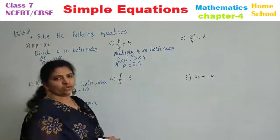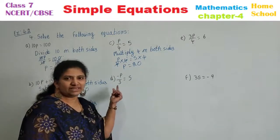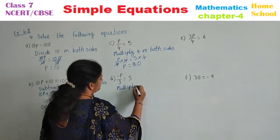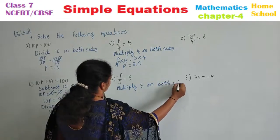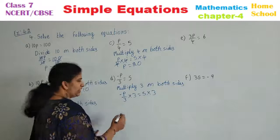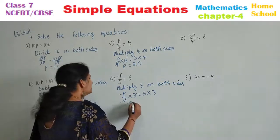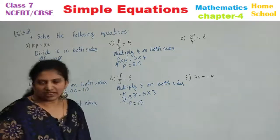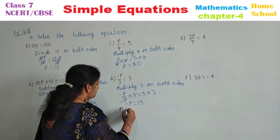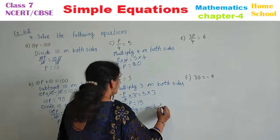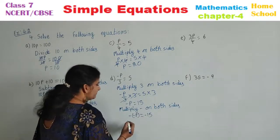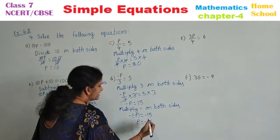D sub-question: minus P by 3 is equal to 5. Number is divided, so we need to multiply with that number. Multiply 3 on both sides. Minus P by 3 into 3 is equal to 5 into 3. 3 and 3 cancel. Minus P is equal to 15. A variable should not have a negative sign, so multiply by minus on both sides. Minus of minus P is equal to minus 15. Minus times minus gives plus, so P is equal to minus 15 is your answer.